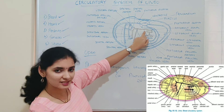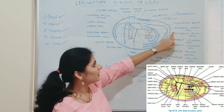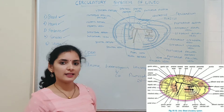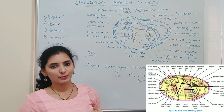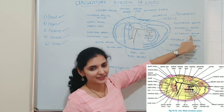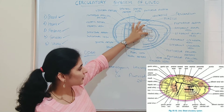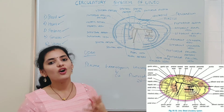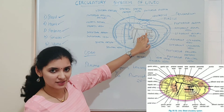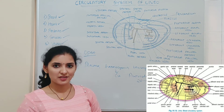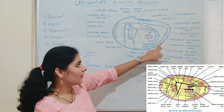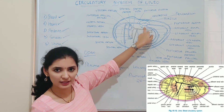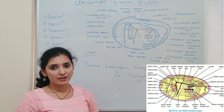The vena cava moves toward the posterior portion and supplies blood to the kidney through the afferent renal vein, where nitrogenous waste is removed from the blood. This blood is then collected by the efferent renal vein, which joins together to form the afferent tenedial vein supplying blood to the ctenidia or gill. In the gill, oxygenation takes place since it is deoxygenated blood. After oxygenation, the blood is collected by the efferent tenedial vein, which pours the oxygenated blood into the auricle of the heart.